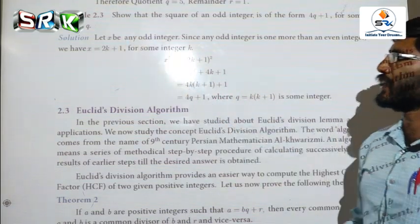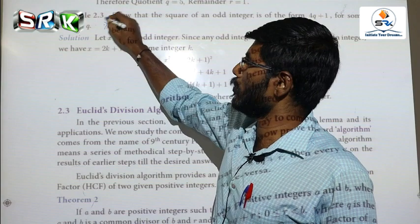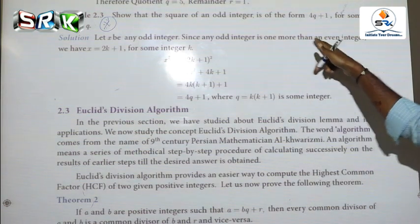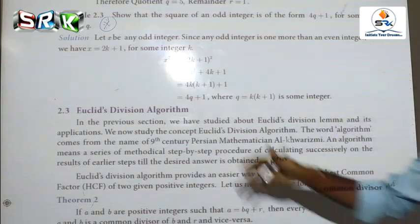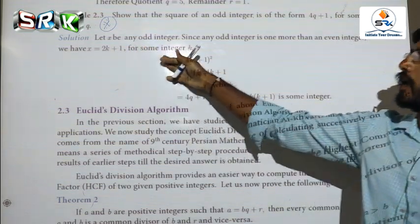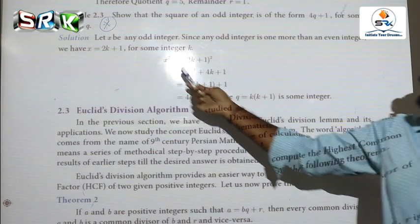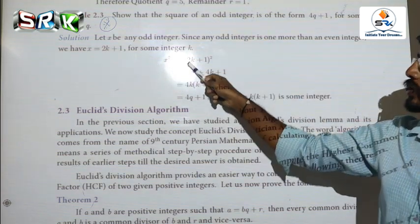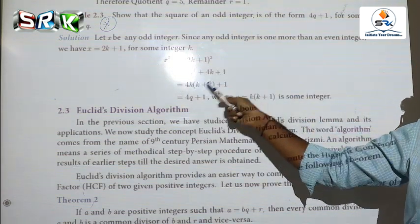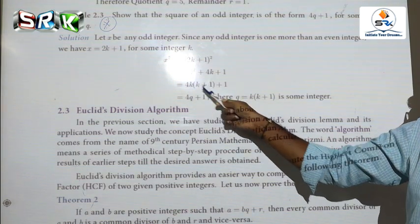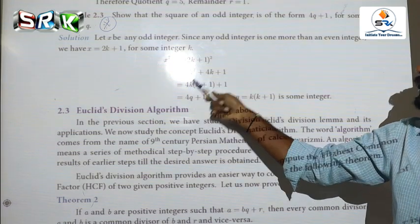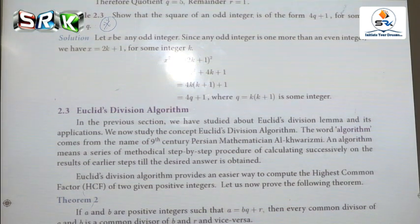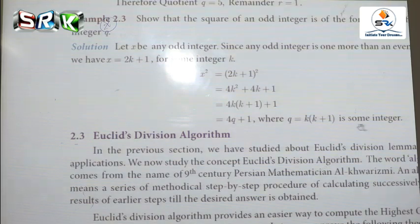This is a very important two-mark question. Let X be any odd integer. Since any odd integer is one more than an even integer, X equals 2K plus 1 for some integer K. Therefore X squared equals (2K plus 1) whole squared. Expanding using the formula (a+b) squared, we get 4K(K+1) plus 1. It is of the form 4Q plus 1, where Q equals K(K+1) is an integer. Hence proved.